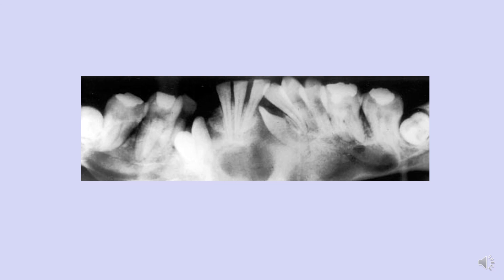The OPG of the same patient showed multiple radiolucencies which on biopsy confirmed odontogenic keratocysts, thus leading to the diagnosis of Nevoid Basal Cell Carcinoma Syndrome. This brings us to the end of today's lecture on odontogenic keratocysts and Basal Cell Nevoid Syndrome. A case-based learning session will be posted on Google Classroom. The next lecture — the last in this series — will cover radicular cyst, lateral periodontal cyst, and nasolabial cyst.